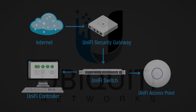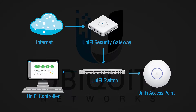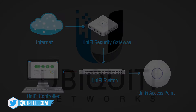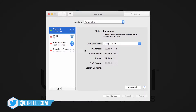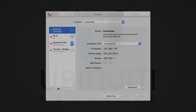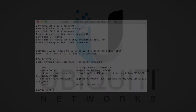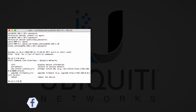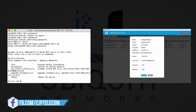For this demonstration, my controller is running on the same local area network as my UniFi device — this will be a layer 2 adoption. My UniFi switch locally connects my access point to my UniFi security gateway, which runs a DHCP server and therefore assigns a local IP. Discovery occurs by default due to broadcast traffic. Layer 3 adoption is also supported via SSH, the Ubiquiti discovery tool, and more.